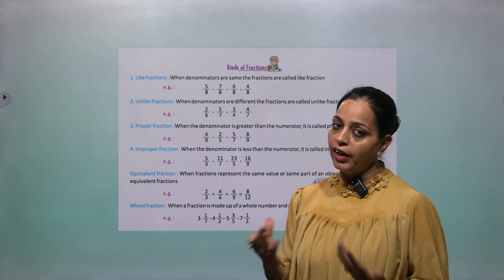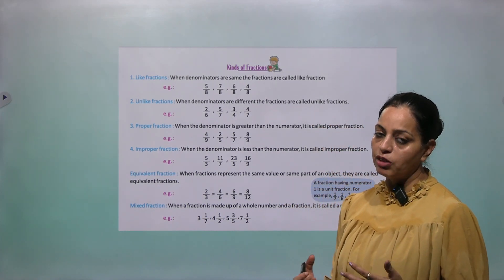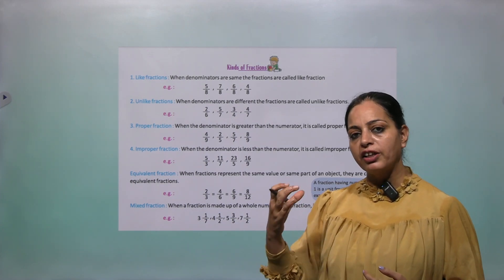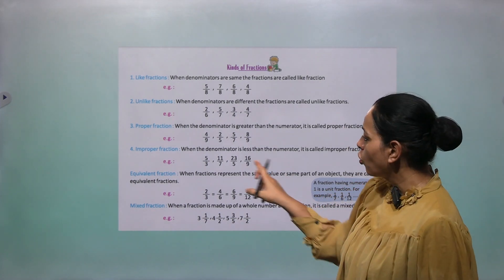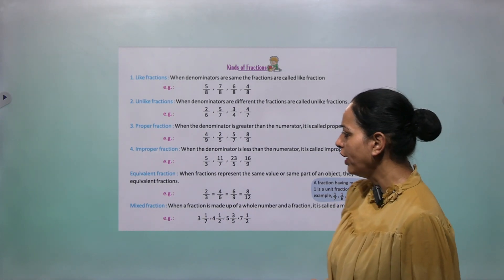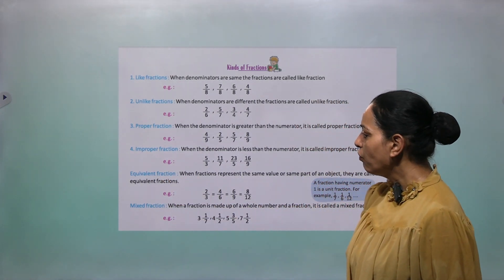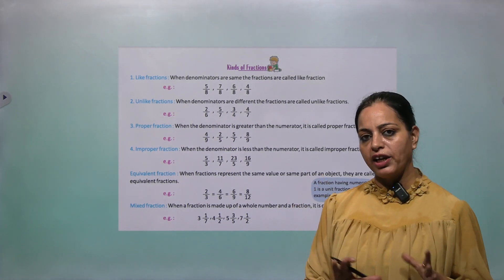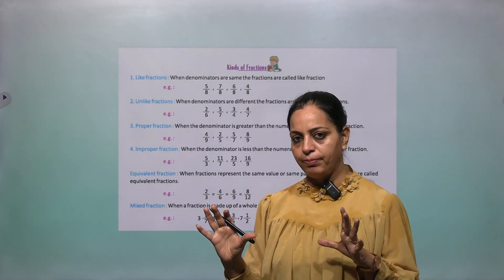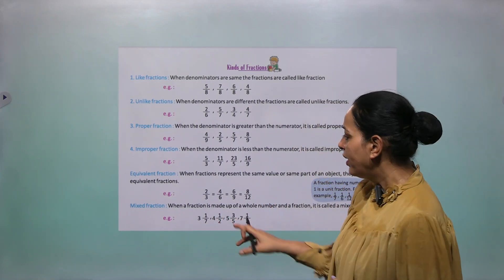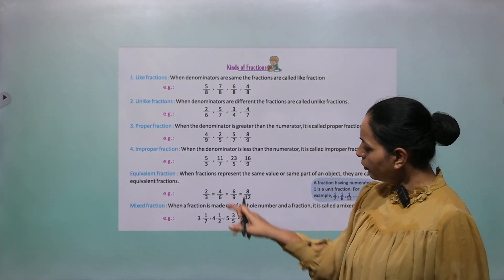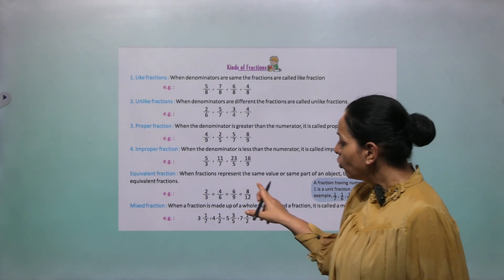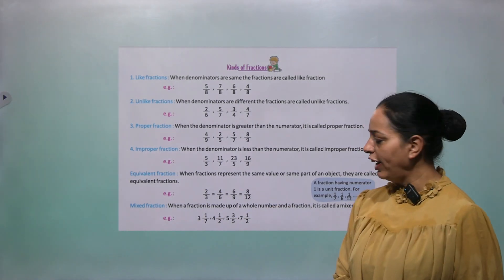Improper fractions are when the numerator is bigger than the denominator. Next is equivalent fractions — when fractions represent the same value. Equivalent means equal. When fractions are equal in value, like 2 by 3, 4 by 6, and 6 by 9 — simplifying all of them gives you 2 by 3. So these are all equivalent fractions.